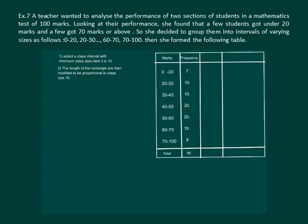Next step is that the length of the rectangles are modified to be proportionate to the class size 10. Let us see how we will do it. We make another column in the table width of class and write corresponding widths: 20-0 gives us 20, 30-20 is 10, 40-30 is 10, 50-40 is 10, 60-50 is 10, 70-60 is 10, and 100-70 is 30.